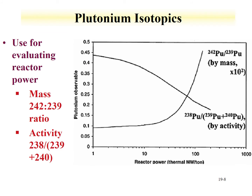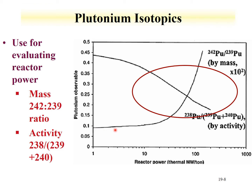Reactor power can also be evaluated through plutonium isotopics—again, the mass ratio of 242 to 239, and then the activity of the 238 divided by the 239 plus plutonium-240, multiplied by 100. This requires rather sensitive instrumentation. For low reactor power, the variation is much greater for the activity ratios, not so much for the mass ratios. There is a regime going from 10 megawatts per ton all the way up to just a couple hundred megawatts per ton where a pronounced regime change is seen, and the determining ratios for both routes can provide clear information.